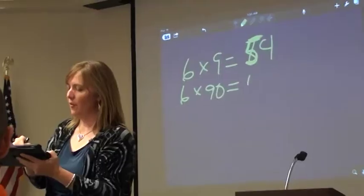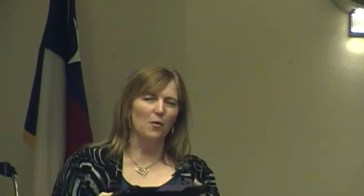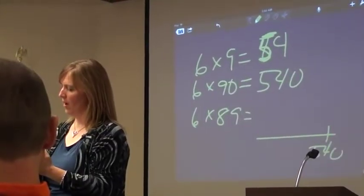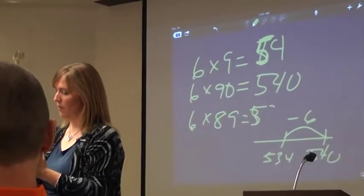If 6 times 9 is 54, what's 6 times 90? Is that 540? And if 6 times 90 is 540, I wonder what 6 times 89 is. If I know that 90 sixes is 540, then I wonder how many 89 sixes is. If I know 90 sixes is 540 and I don't want 89 sixes — how many less sixes do I need? What is 540 less one 6? What is 540, get rid of 6... 534. Is that 534?